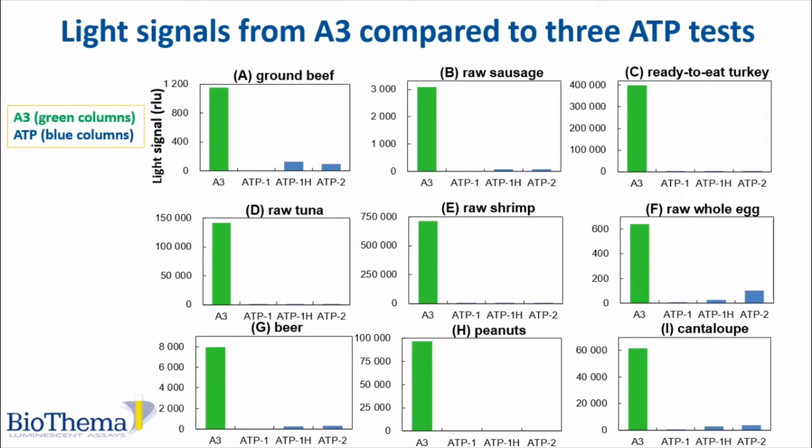Comparing light signals from A3 versus three ATP tests: A3 is shown in green columns and ATP in blue columns. As you can see, the A3 signal is always much higher than the ATP results.